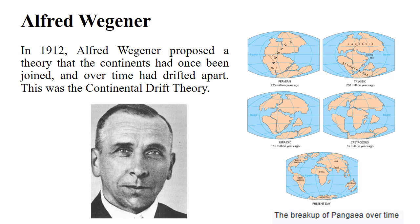You can see in the map that there was only a single landmass, or supercontinent, during the Permian period. With the passage of time, this landmass drifted and separated into different fragments. You can see the location of the landmasses during the Triassic, Jurassic, and Cretaceous periods, and you can see the present location of the continents, now further apart from one another.